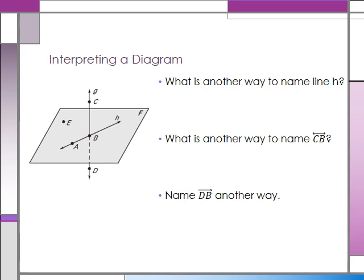Geometry is all about interpreting diagrams — looking at pictures, using them to prove things, using them to help you understand things. Let's look at a couple of diagrams. First, let's use this diagram to practice what we learned. We want to know another name for line H — here is line H, and I've got two points on it, so I can name it AB or BA; it doesn't matter.